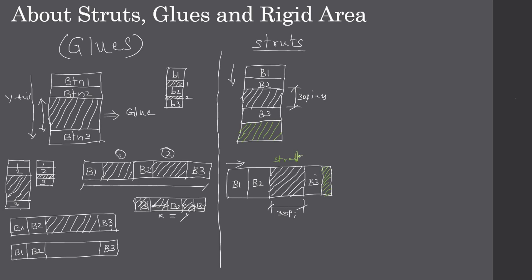When creating a strut for a vertical arrangement, the width is not fixed — we are just providing how much space to occupy by providing a dimension in the vertical layout. Whatever height we provide, that is actually a width in horizontal. If you want to fix both width and height, then you should go for a rigid area.